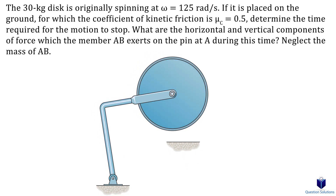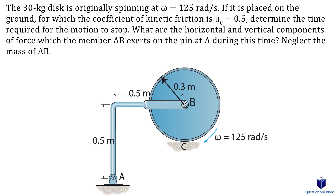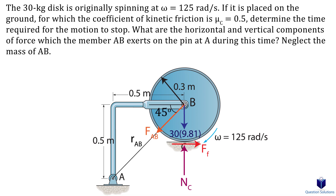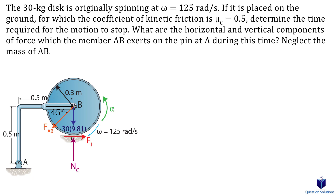Next, we have a spinning disk placed on the ground, and we need to find how long it takes to stop, plus the horizontal and vertical forces at point A. We solve for the stopping time first, then the reactions at A. In the free body diagram, weight acts at the center, the normal force is at the contact point, and friction points to the right since the wheel spins clockwise. The force from member AB acts at point B along the position vector from A to B, so force vector Fab points toward A. The angular deceleration is opposite to the spinning direction.